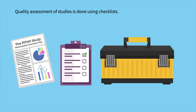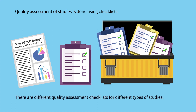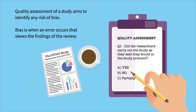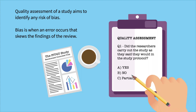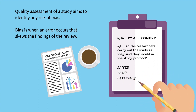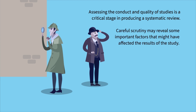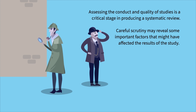Quality assessment of studies is done using checklists. There are different quality assessment checklists for different types of studies. Quality assessment of a study aims to identify any risk of bias. Bias is when an error occurs that skews the findings of the review. Assessing the conduct and quality of the studies is a critical stage in producing a systematic review. Careful scrutiny may reveal some important factors that might have affected the results of the study.